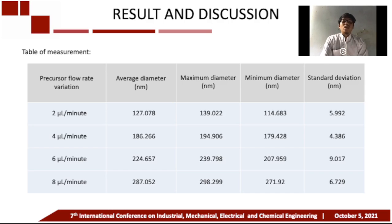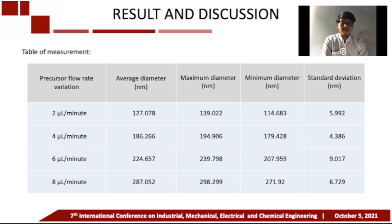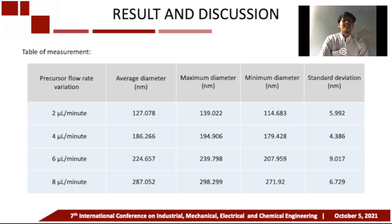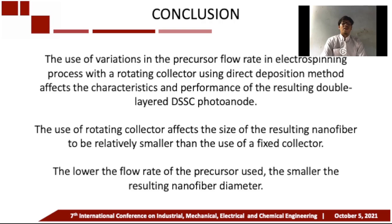The use of a rotating collector also increased the evaporation rate of the solution, producing nanofibers with a smaller diameter compared to the use of a fixed collector. This proves previous studies which explained that the use of a rotating collector will cause the nanofiber diameter to be relatively smaller. The size reduction of nanofibers, either from low flow rate variations or the use of a rotating collector, will increase the dye absorption area by the semiconductor, which may have an impact on increasing DSSC performance, though more research is needed to prove it.